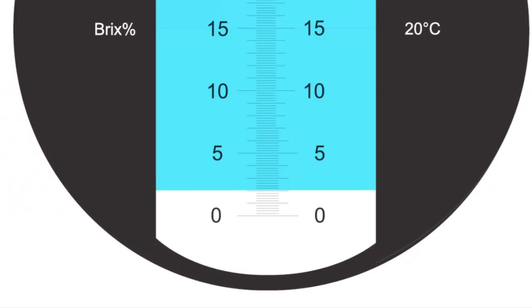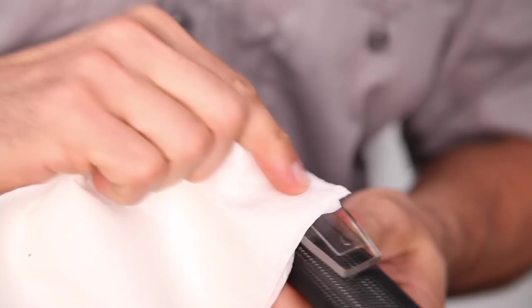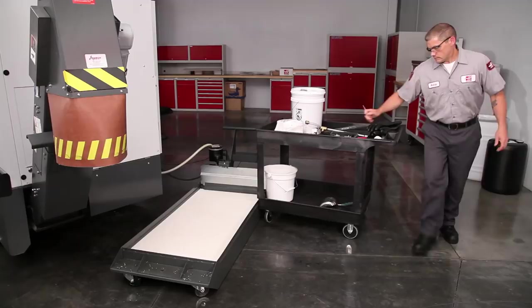Wipe off the prism. The baseline for this water has been set. Now, let's check the concentration of the coolant. Take a sample and place several drops on the prism.